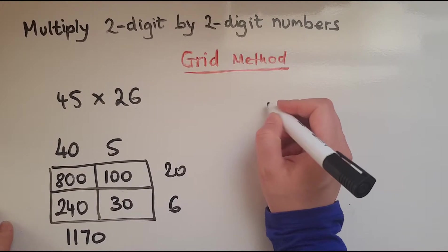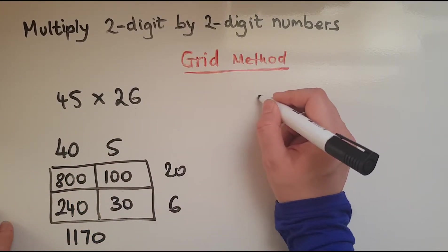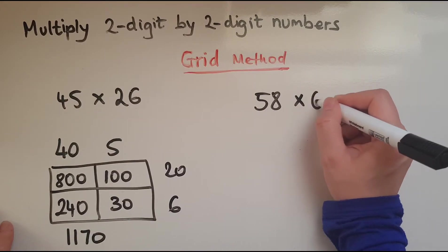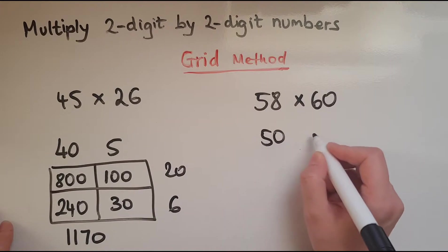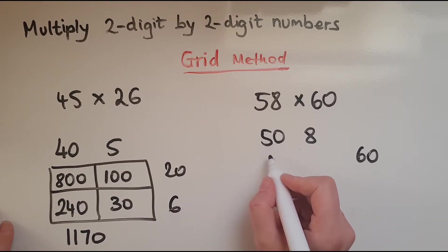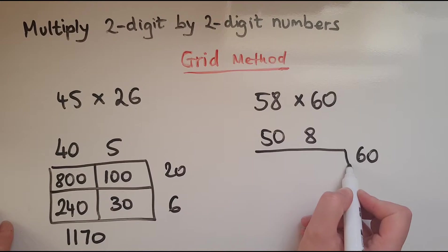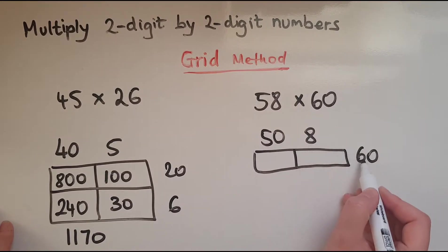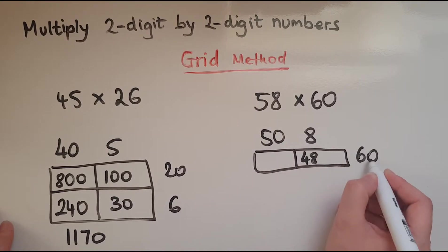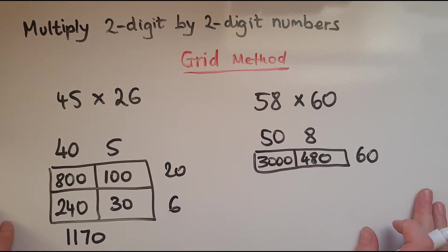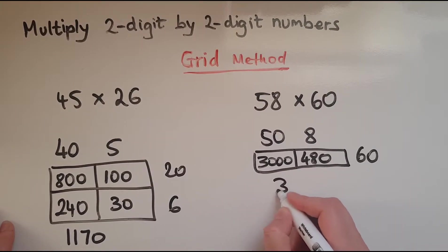Let's do another one: 58 times 60. So we split into 50 and 8, multiplied by 60. There's no units digit, so we just use 60. 8 lots of 60: do 8 lots of 6 first, which is 48, then add the 0 back — 480. 50 lots of 60: 5 lots of 6 is 30, add two 0s — that makes 3,000. So the answer is 3,480.